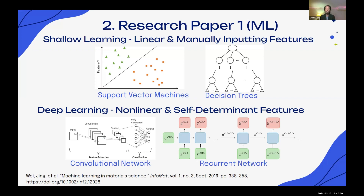Shallow learning, though cost-effective, cannot compete with the accuracy of deep learning, especially for nonlinear tasks, due to its reliance on manual feature engineering. Deep learning, including automatic feature extraction, performs better in materials science using CNN and RNN architectures for tasks such as material detection and quantum chemistry. However, challenges like limited material databases and complex neural networks require careful algorithm selection for specific tasks.